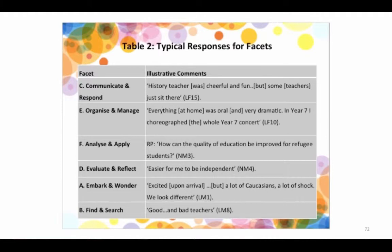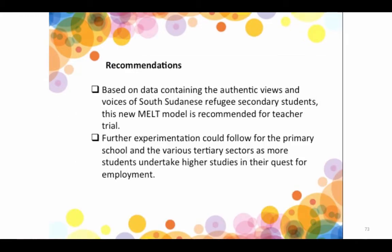Phase D: one student, an independent type whom I had taught myself, said, 'It's easier for me to be independent if I ask the teachers — but I don't know how or when to ask them.' Phase A: a typical response was being so excited on arrival but shocked by all the Caucasians around — 'We look different' — so visibility is a hurdle they have to personally overcome, and it doesn't help if teachers aren't accepting. One young man said there are good and bad teachers, but 'I really love the way they always keep coming back.'